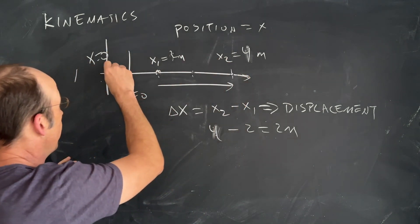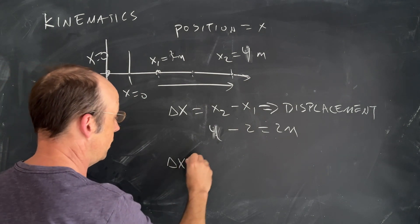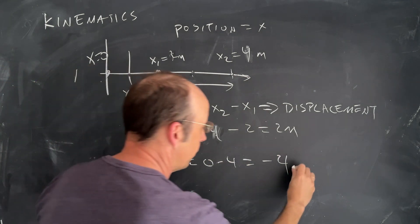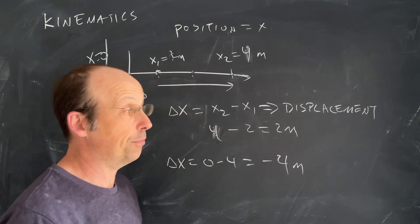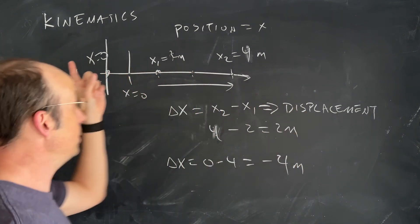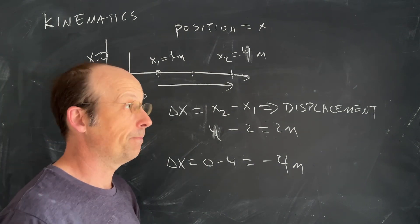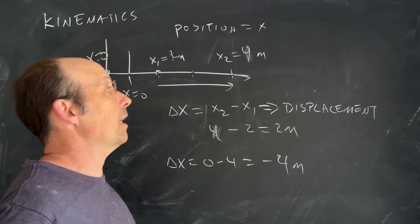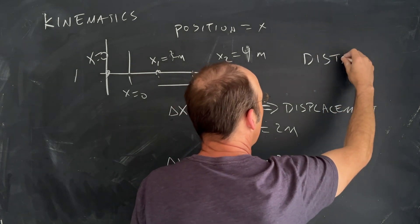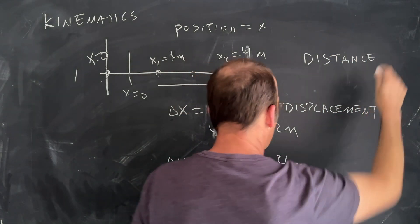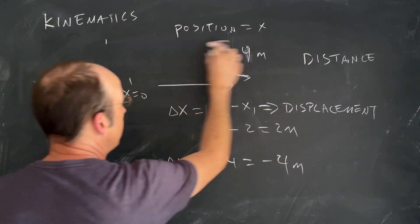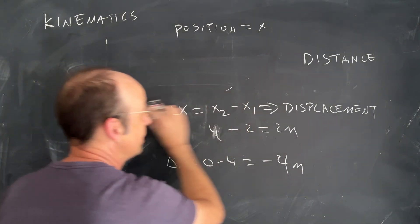Imagine that I go from x2 to the origin: delta x would be zero minus four, which is negative four meters. So you can have a negative displacement — it's not the same thing as position. You can have a negative position too, which would be over here on the negative side.